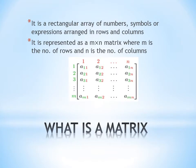A matrix is a rectangular array of numbers, symbols, or expressions arranged in rows and columns. It is represented as an M into N matrix, where M is the number of rows and N is the number of columns. To represent a matrix, we use a two-dimensional array, since only a two-dimensional array contains both rows and columns.